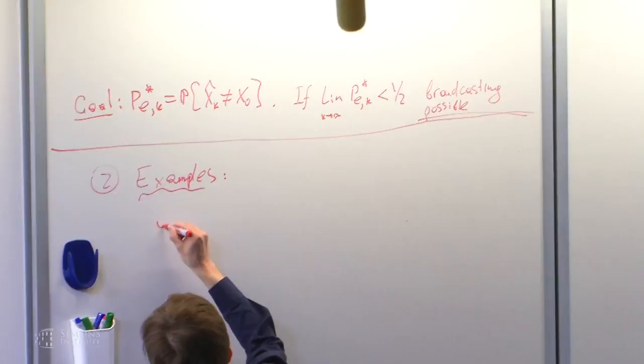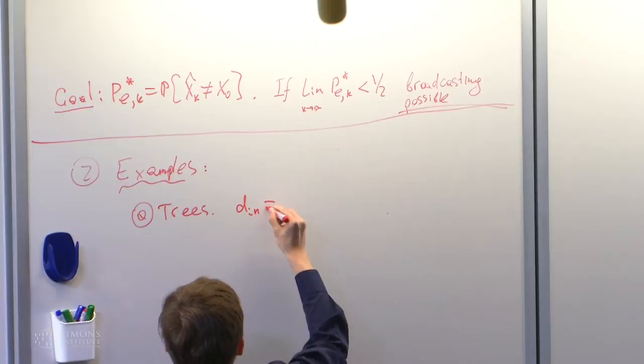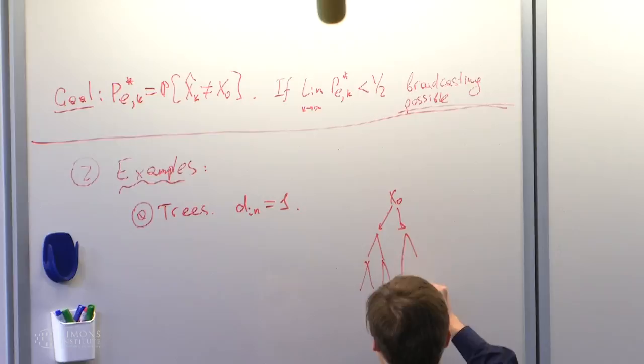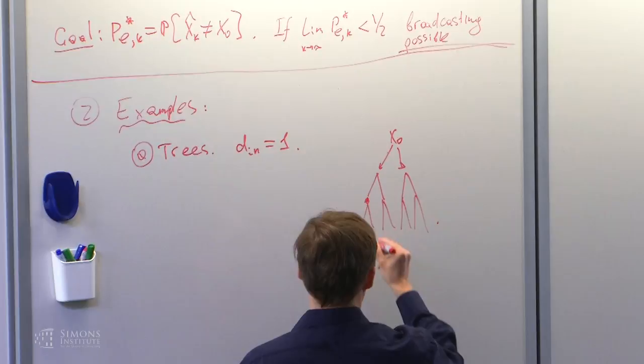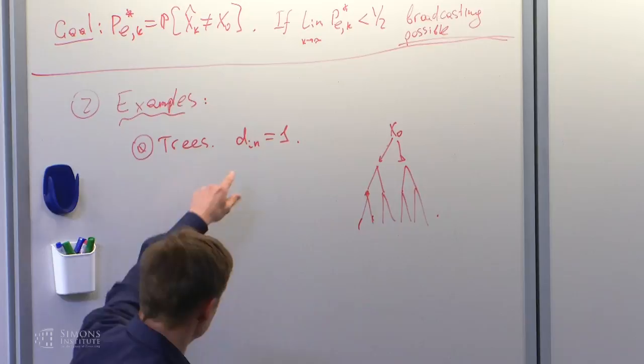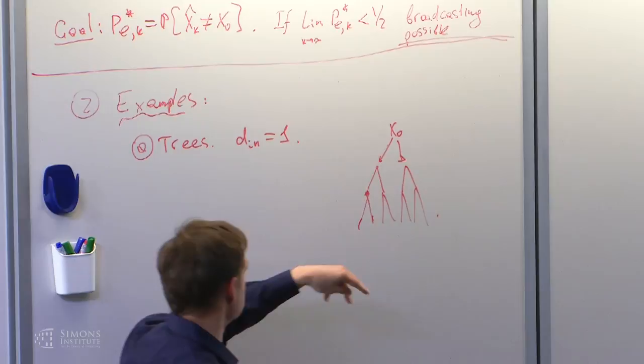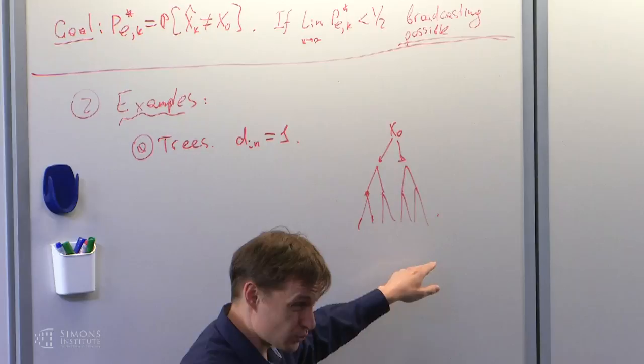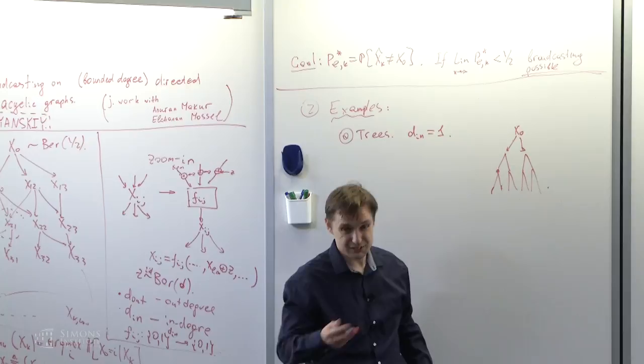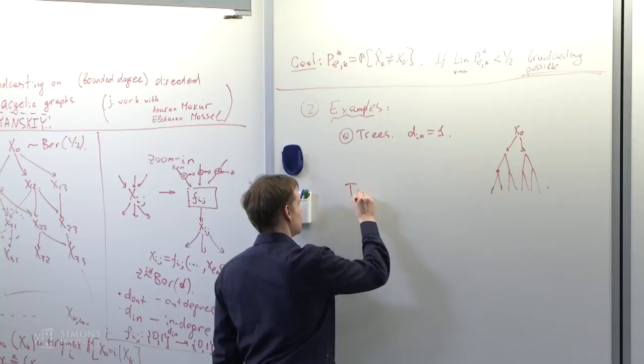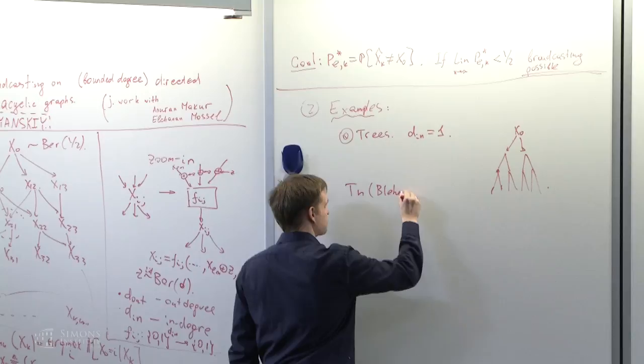Let me give you examples first. Example A: Trees. This is a special case where the in degree of every node is one. We get a very simple picture. For example, consider a regular tree. This is a famous problem.